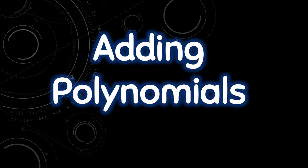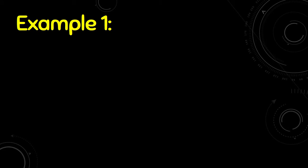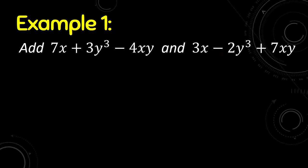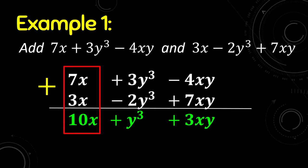In adding polynomials, we only add like terms. For example, we are going to add 7x plus 3y³ minus 4xy and 3x minus 2y³ plus 7xy. We will check what are the like terms. We can see that 7x and 3x are like terms, 3y³ and negative 2y³ are like terms, and negative 4xy and positive 7xy are also like terms.